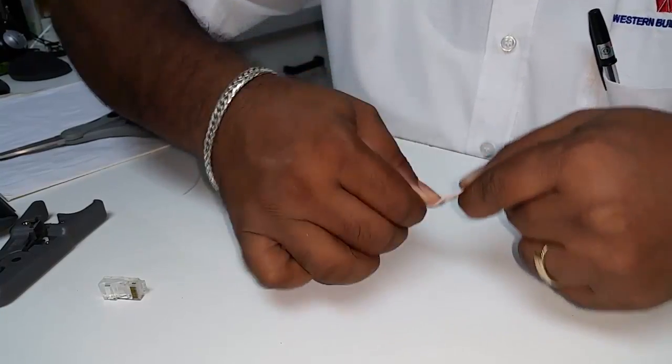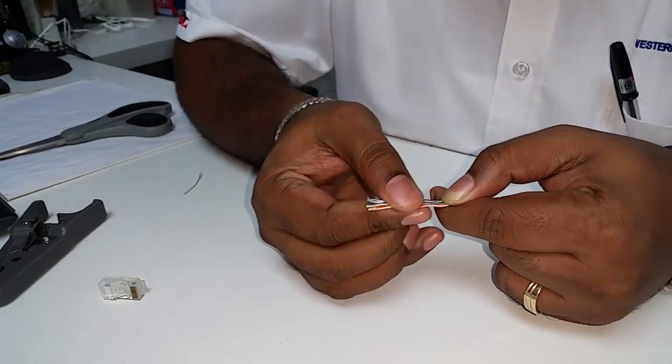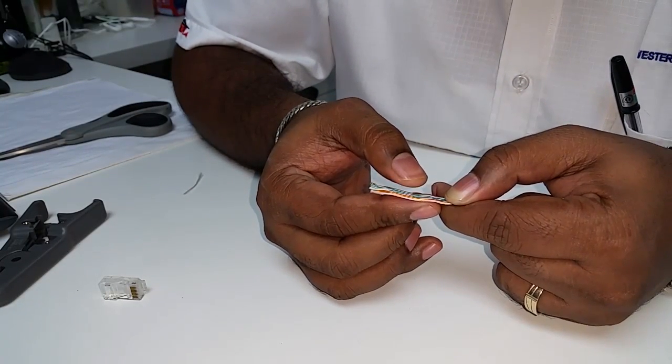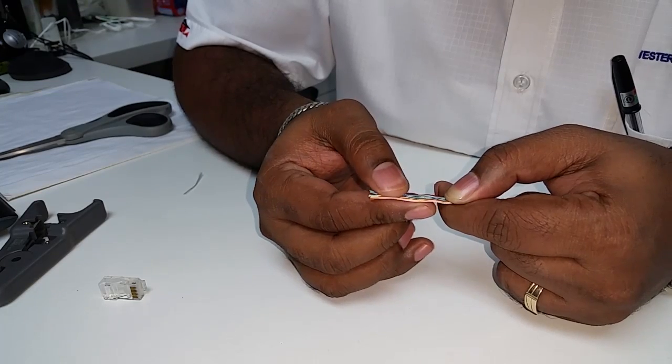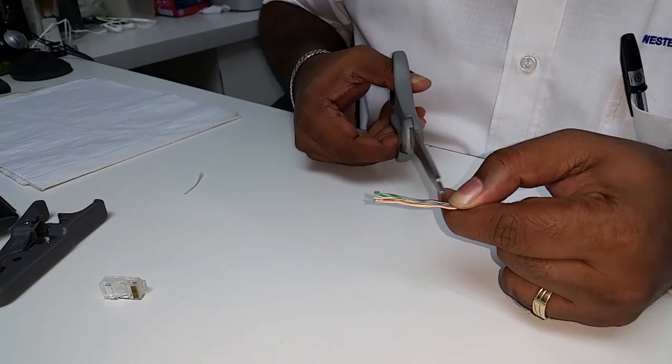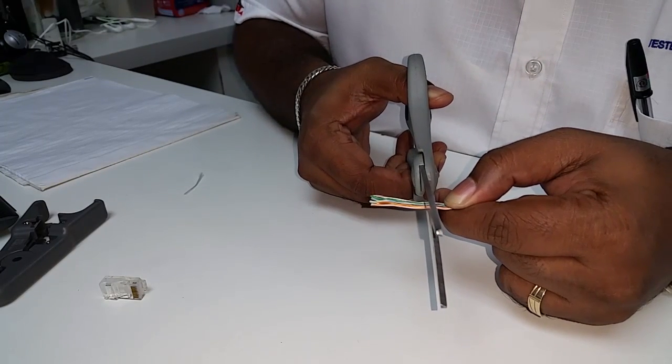Then very tightly pull like this and then like this, and you see it's very nicely white orange, orange, white green, blue, white blue, green, and white brown, brown. Then you take scissors maybe one centimeter from your finger and cut a straight line.